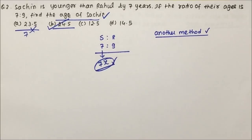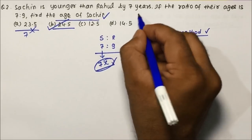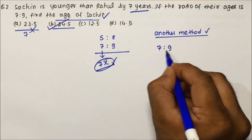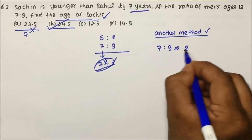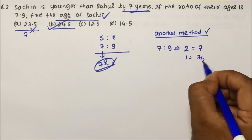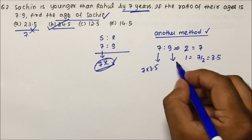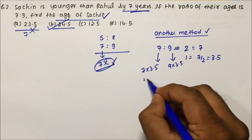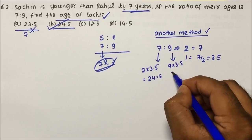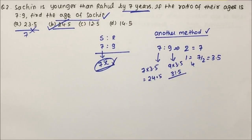Now let us see another method to solve this kind of question without using pen and paper. Sachin is younger than Rahul by 7 years, so the age difference is 7 years. The ratio of their ages is 7 is to 9, so the difference in ratio is 2. But in the question the difference is 7 years, so 2 equals 7, meaning 1 equals 3.5. That means Sachin's age is 7 into 3.5 equals 24.5 and Rahul's age is 9 into 3.5 equals 31.5. Both methods are easy.